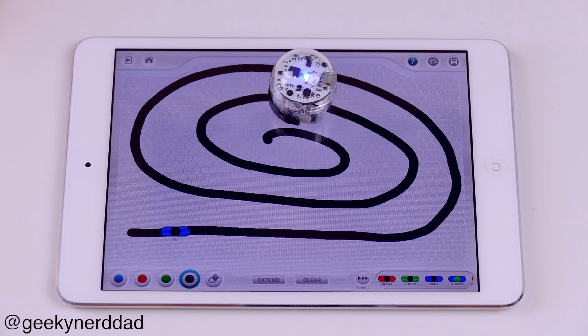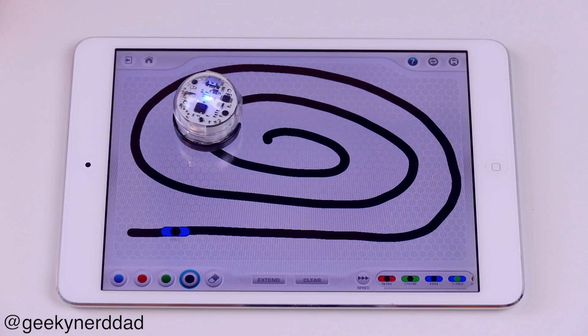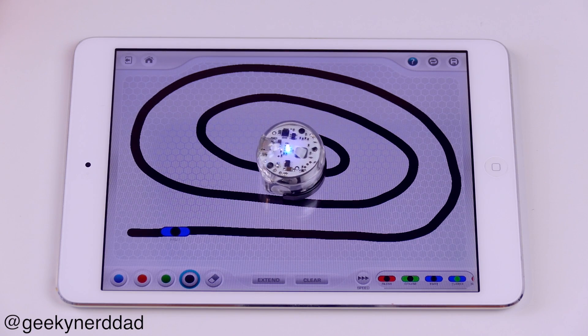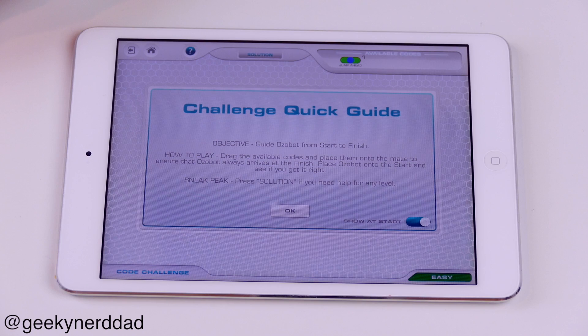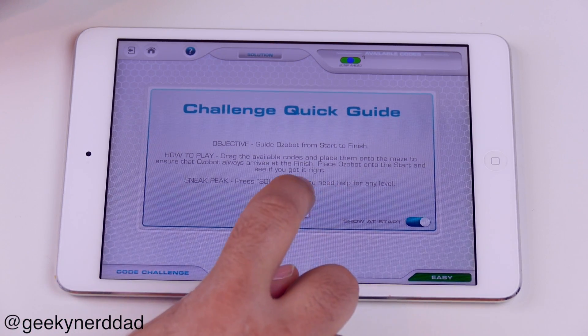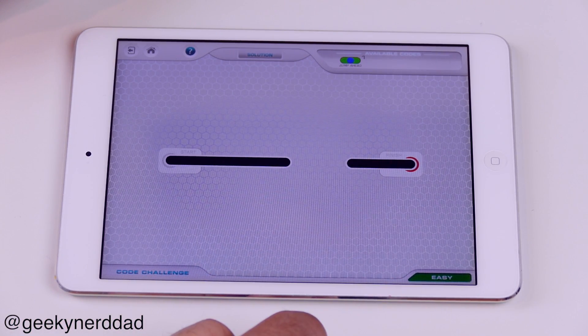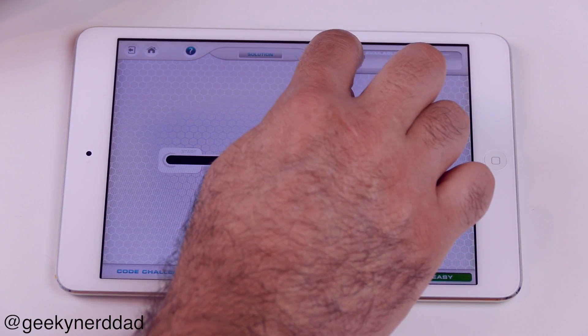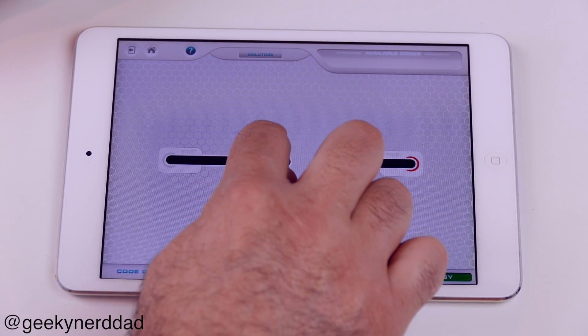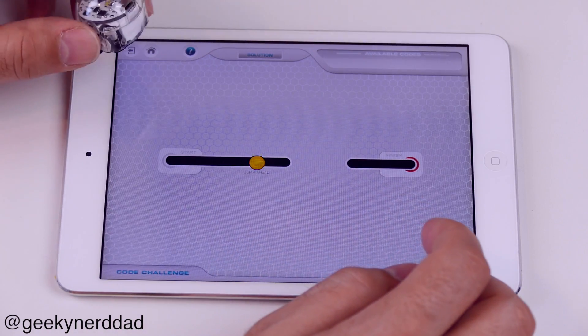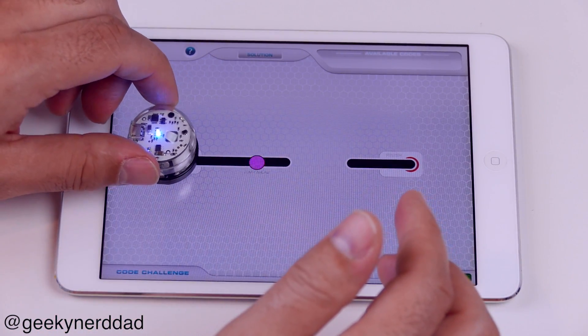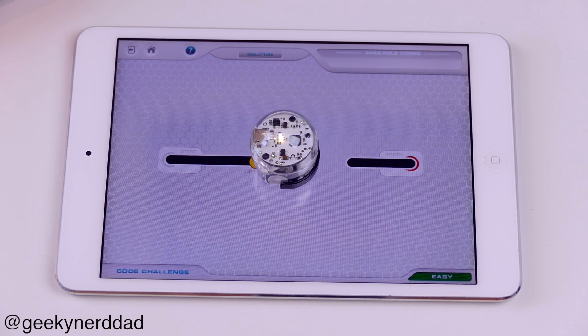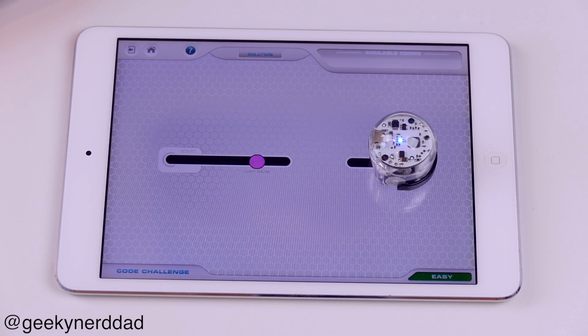Aside from the tablet part of it, my kids have iPads and that part's cool, but I really like the fact that they can get some markers and paper and actually draw out whatever they want. I'm thinking about getting a roll of butcher paper and just rolling it out and let them just come up with their craziest imagination track and just see if we can get it to work. I'm actually thinking about purchasing a few more of these Ozobots just so we can do some crazy stuff.